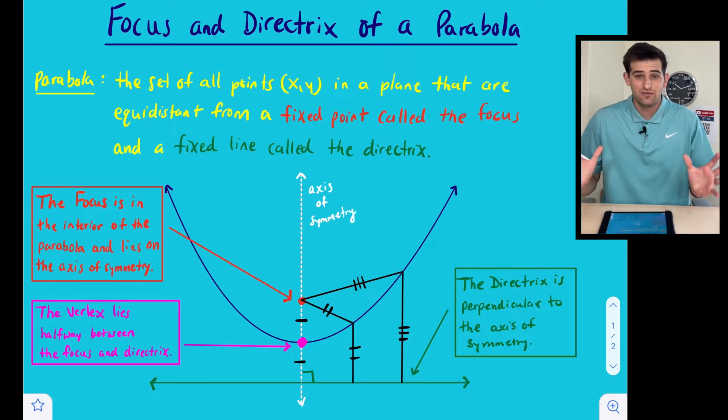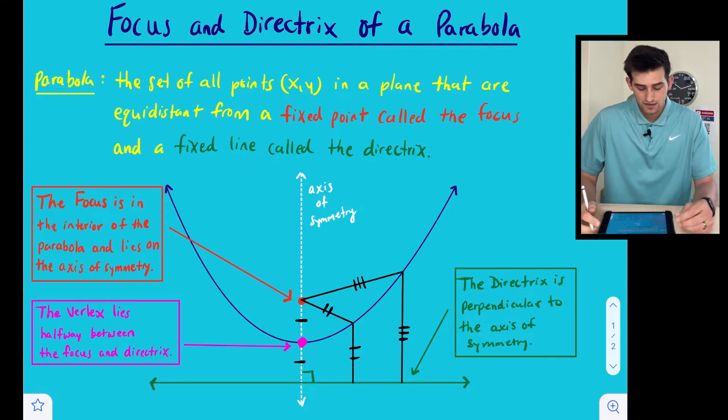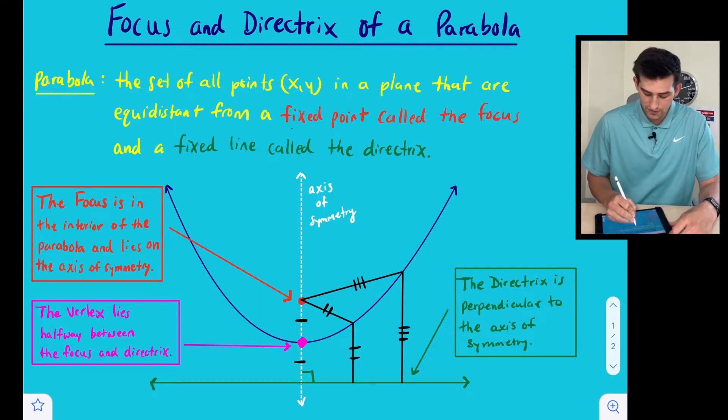A parabola, another definition of it, is just a set of all points x and y in a plane that are equidistant from two things: a fixed point called the focus, and a fixed line called the directrix.